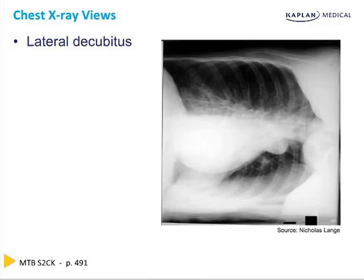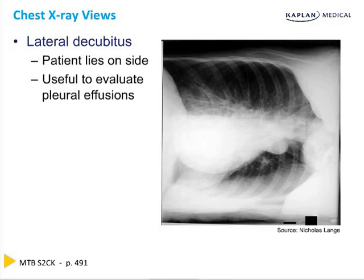The final X-ray position we will discuss is the lateral decubitus view, which is taken with the patient lying on one side. While not a standard X-ray view, lateral decubitus films are useful when a pleural effusion cannot be differentiated from a region of consolidation like a lower lobe pneumonia. When the patient lies on their side for a lateral decubitus film, if the finding on the PA X-ray is fluid, it will layer out because fluid in the pleural space is freely mobile. However, if the finding is a consolidation within the lung parenchyma, it will not change location, but rather will remain localized to the lower lobe of the lung.